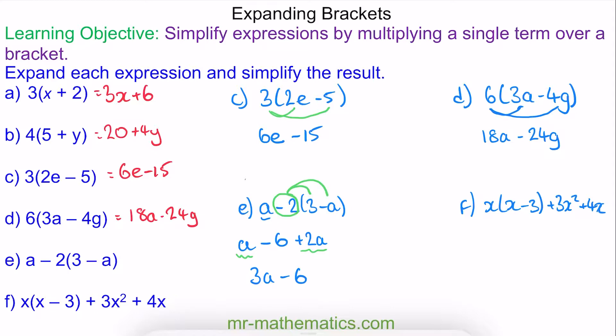And finally, for question F, we have x times x, which is x squared. And then x times negative 3, which is minus 3x. We're going to add this to 3x squared plus 4x.